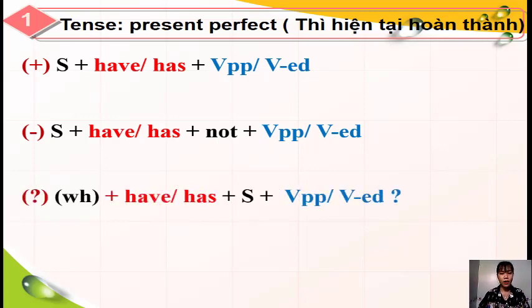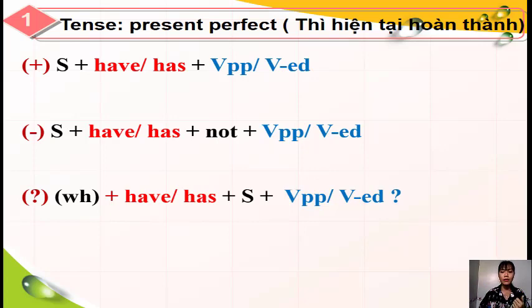Đối với thể nghi vấn, chúng ta chỉ việc đảo 'have' và 'has' ra phía trước chủ từ, cộng cho động từ ở hình thức phân từ 2 hoặc động từ thêm '-ed'.